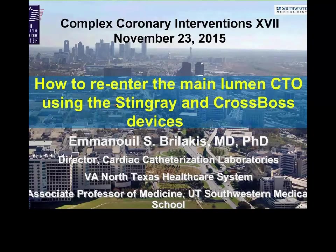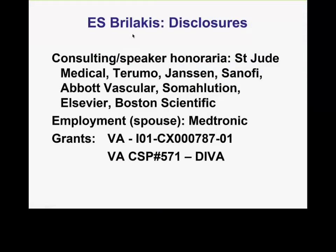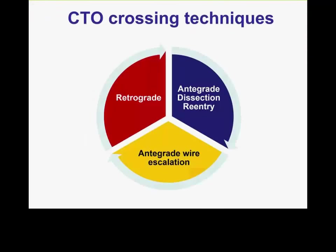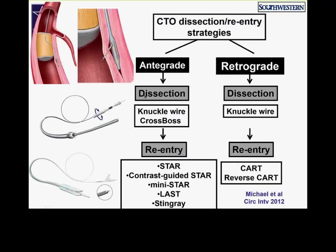Moving on to the next presentation — recently given at the Great Wall meeting in Beijing, China — this covers advanced dissection and re-entry techniques: how to get back into the main lumen of the vessel after going subintimal. There are different techniques for crossing: antegrade wires, antegrade dissection re-entry, and retrograde techniques — all can be useful. The ones with the most confusion surrounding them are the dissection techniques, both in the antegrade and retrograde directions.